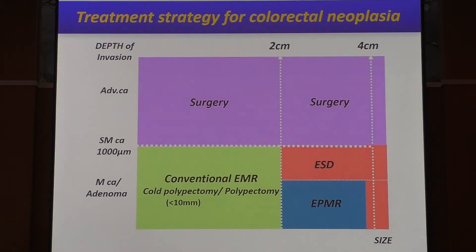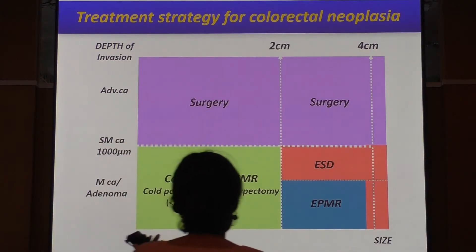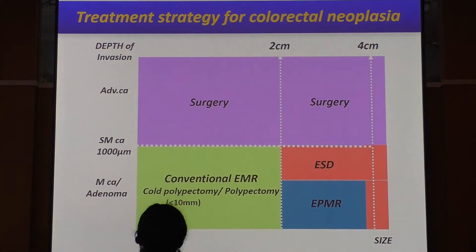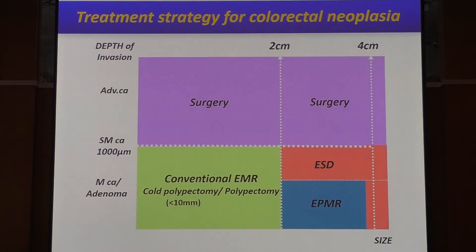This slide summarizes how to select treatment strategy for colorectal neoplasia. If the lesion is considered to be deep SM invasive cancer or deeper cancer, surgery is indicated. On the other hand, if the lesion is considered as intramucosal cancer or precancerous lesion, endoscopic resection is chosen. The selection of ESD or EMR is based on the necessity of en-bloc resection and the size of the lesion.